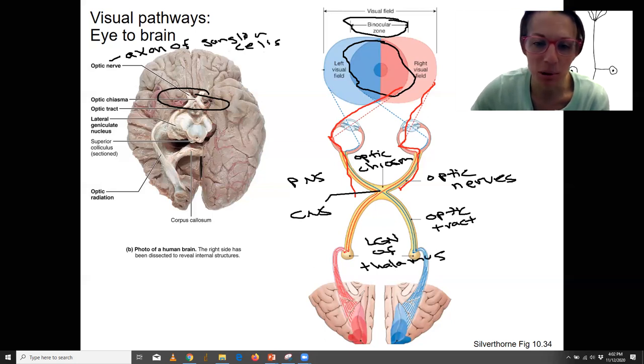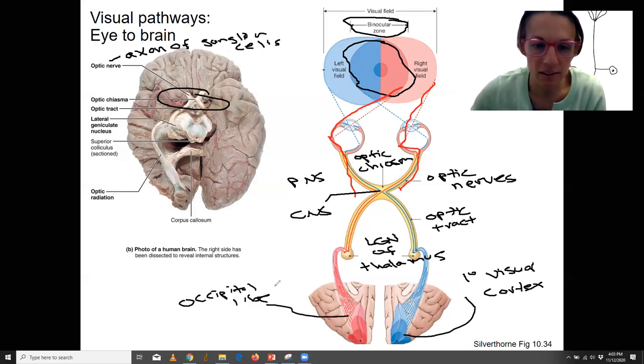Beyond this, this is the optic radiation. This back here is your primary visual cortex in the occipital lobe. Right, occipital lobe is the one in back here. That's this, as well as this.